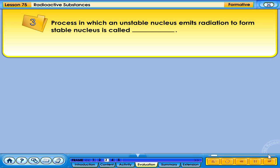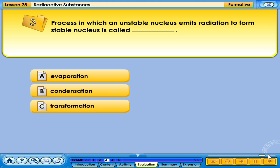Process in which an unstable nucleus emits radiation to form stable nucleus is called: A. Evaporation, B. Condensation, C. Transformation, D. Radioactive decay.